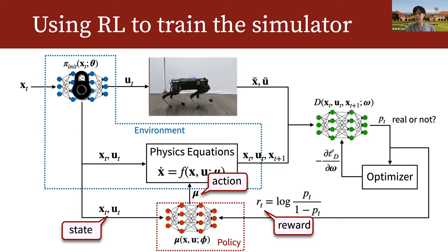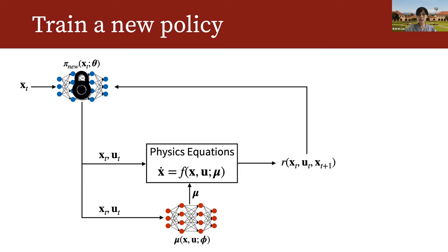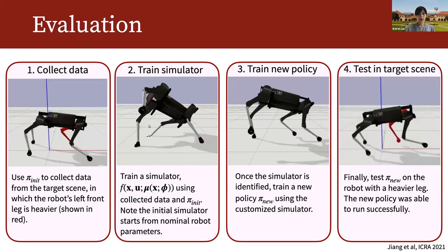Another benefit of training the simulator as an RL agent is that it is optimized to match real trajectories over an extended period of time, maximizing long-term reward rather than just each time instance. To summarize, with the ideas of hybrid simulator, adversarial learning, and training the simulator like an RL agent, we solve all the problems of conventional system identification. Once the hybrid physics engine is learned, we fix the simulator parameters φ and use normal RL techniques to learn the policy parameters θ, then test the robot in the real world in a zero-shot fashion.